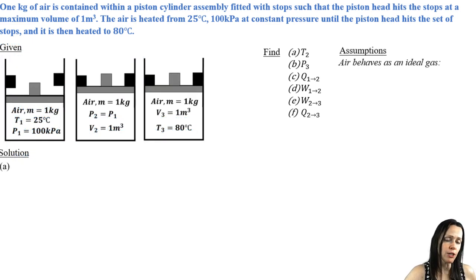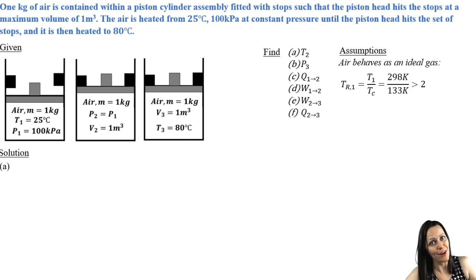It tells me I can assume that air behaves as an ideal gas, but I can verify that that was a good assumption. Or if I was asked to do so on a test, I could do that using my reduced temperature. If the reduced temperature is greater than two or the reduced pressure is less than 0.1 or the Z value is greater than 0.9, I can assume it's an ideal gas in this class. And clearly the reduced temperature that I calculate is greater than two.